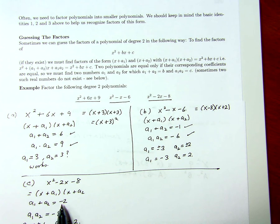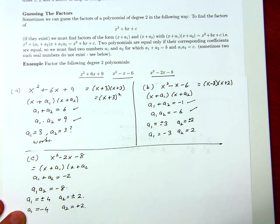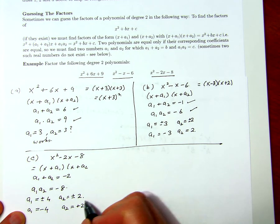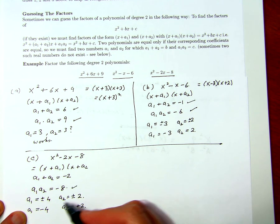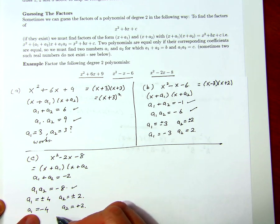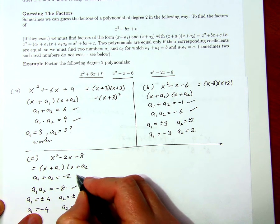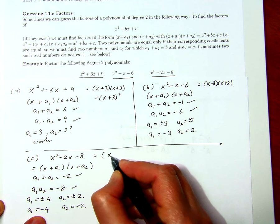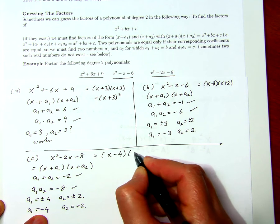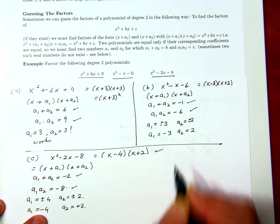I have minus 4 times 2 is minus 8, and we have minus 4 plus 2 is minus 2, so that works. And so this is equal to x plus a1, which is x minus 4, times x plus 2, and I've found the factors.